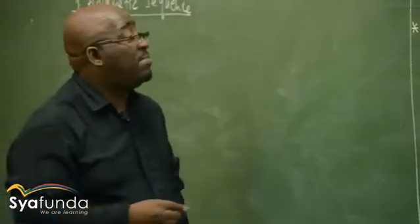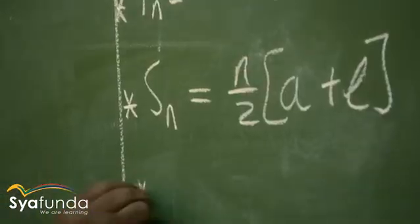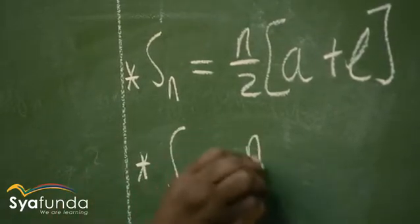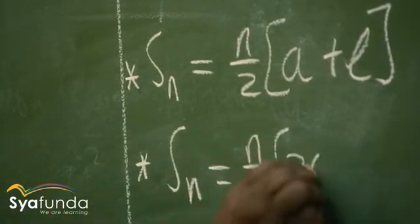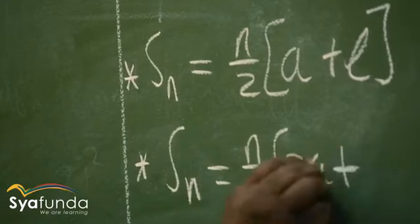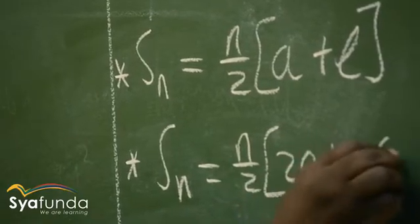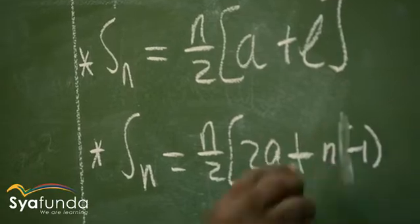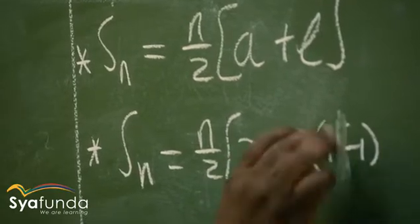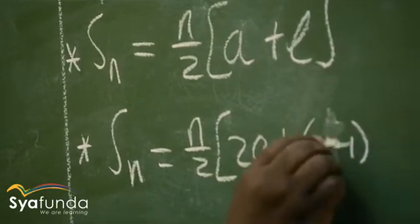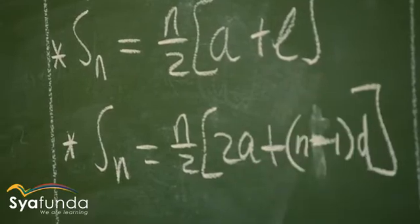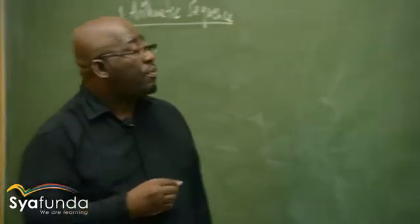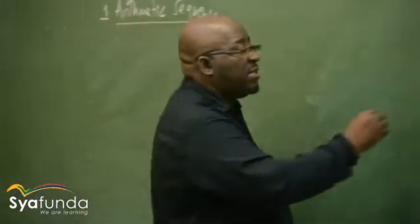I will talk about the sum now. Another formula for the sum says S_n is equals to n over 2 into 2a plus n minus 1 times d. This is another important formula for the sum. That is the arithmetic sequence.